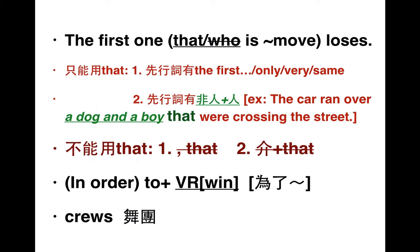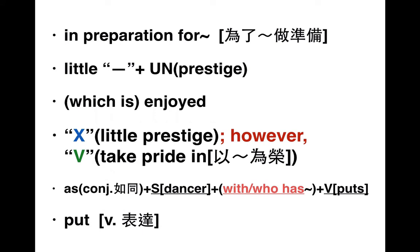那什么时候不可以用 that 呢？第一，that 前面有逗点时不可以用；第二，that 前面有介词时不可以用。To win their battles, crews will have practiced for weeks in preparation for a competition. 'In preparation for' 是为了什么做准备，这里是为了比赛做准备，这个时态是未来完成式。